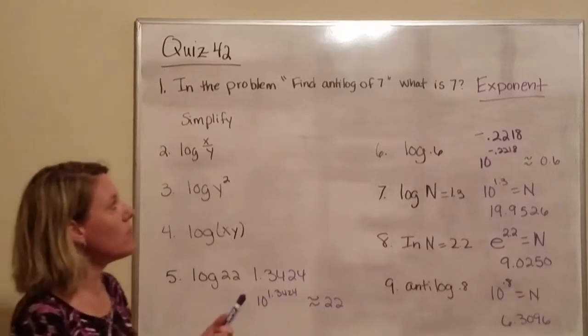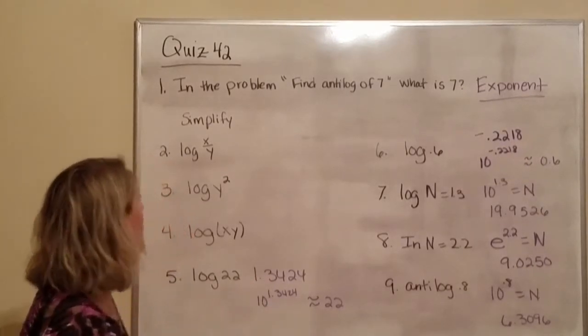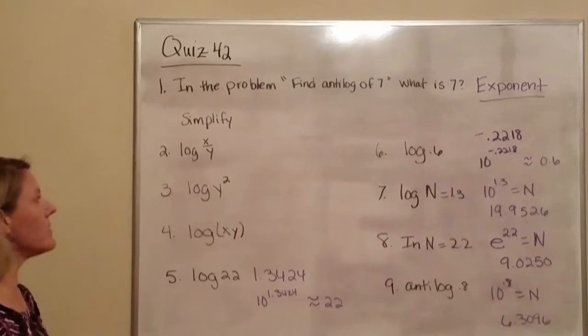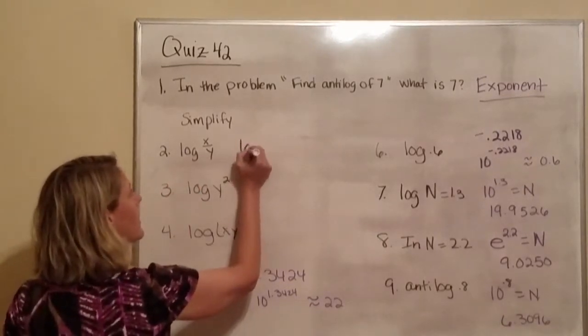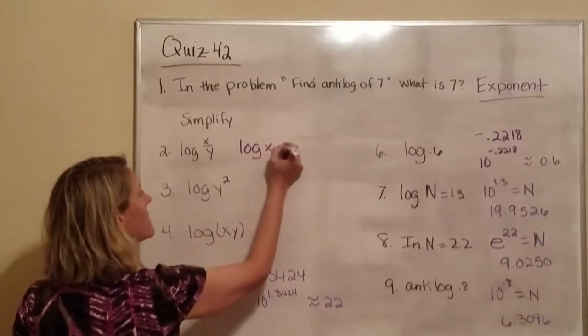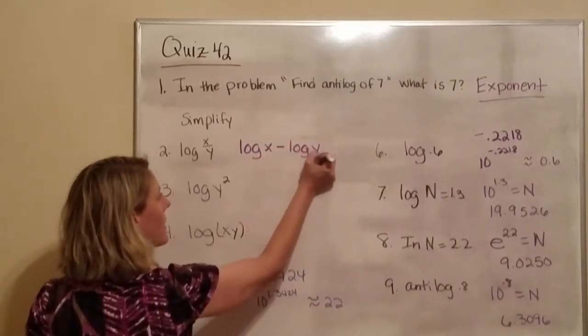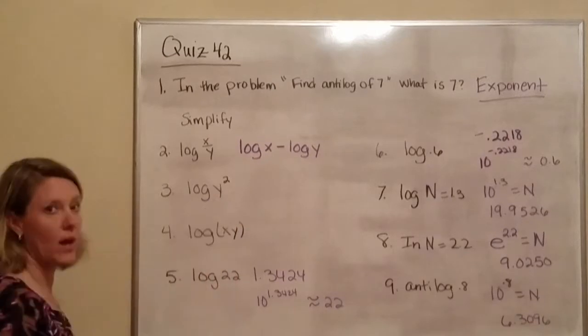Well, 7 would be the exponent. Okay, they want us to simplify this. If we see this, then it's the same thing as log x minus log y. So division is subtraction.